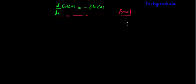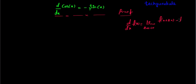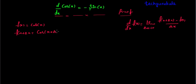To start with, as usual, let us take the basic formula, which is: differentiation of a function is equal to limit as del x tends to 0, of f of x plus del x minus f of x, divided by del x. Now we know in this case f of x is equal to cos of x, and f of x plus del x is equal to cos of x plus del x.